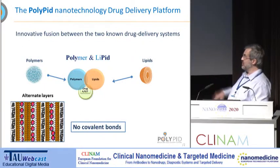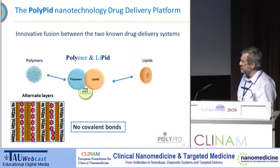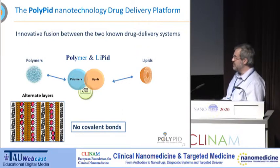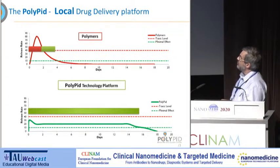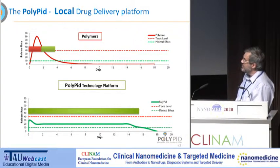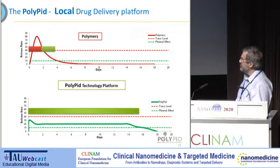Generally speaking, it's a nanostructure — a repeated element of alternate layers of lipids, polymers, lipid-polymers one after the other, whereas the drug is intercalated between those layers. There are no covalent bonds in this system at all between the drug or other compounds. The most common local drug delivery uses polymers, but commonly you have huge initial bursts that can be toxic, then a first and second order decline of the release rate.